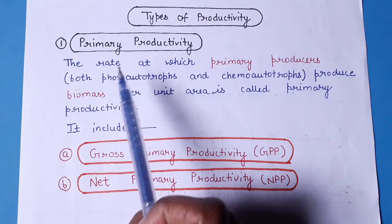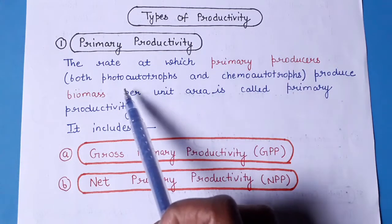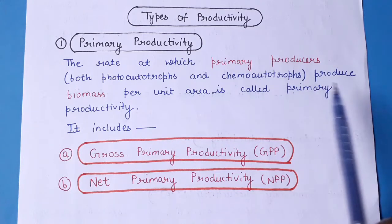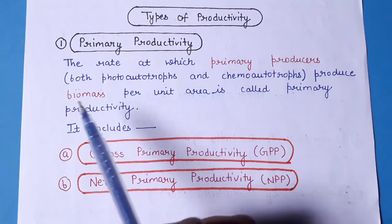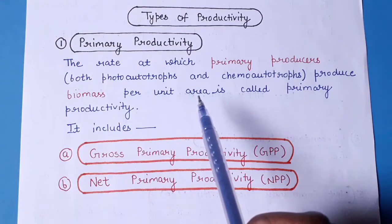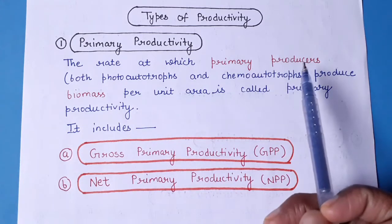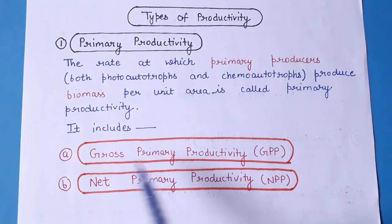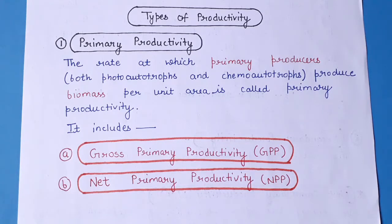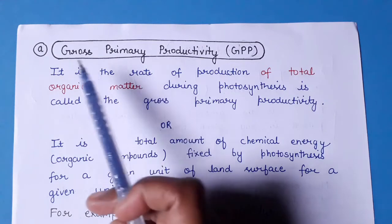Firstly, we will take up primary productivity. Primary productivity is basically the rate at which primary producers — like the photo-autotrophs and the chemo-autotrophs — produce biomass per unit area. It is referred to as primary productivity because it is the productivity by the primary producers. It includes gross primary productivity and net primary productivity.